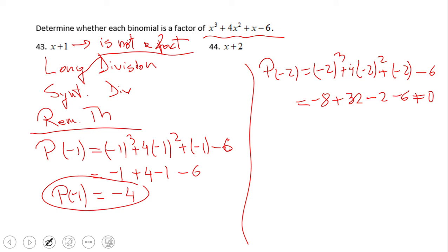We also note for number 44 that P of negative two is not zero, which tells us the same thing — that g is not a factor. So when do you get a factor? When the value of the function equals zero. If you enjoyed this video, don't forget to click the like button and come back to C-Squared for more math video clips. Thank you!